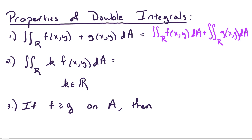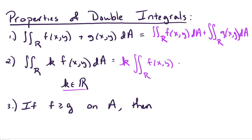Next, let k be a scalar. The double integral over R of k times f(x,y) dA is equal to k — we can pull the constant out in front — times the double integral over R of f(x,y) dA.